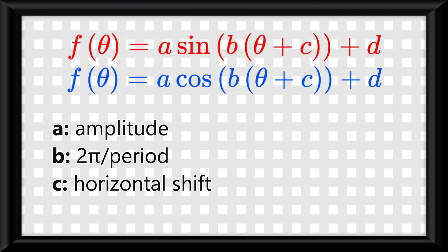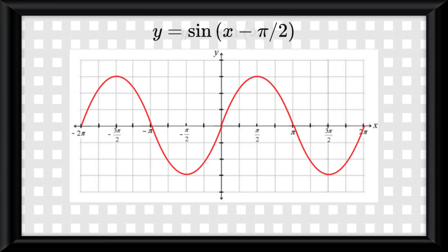C is the horizontal shift, or as it's known in the trig world, as the phase shift. Just like any horizontal translation, it moves the graph by negative C units left or right. So negative π over 2 would move the graph π over 2 units to the right because it's always the opposite.